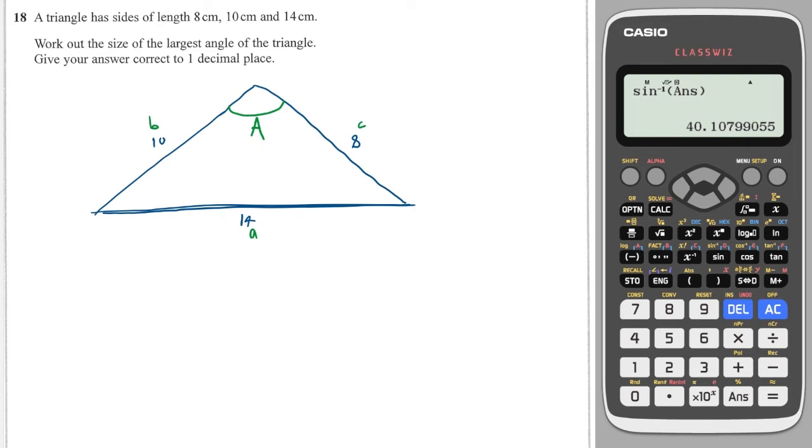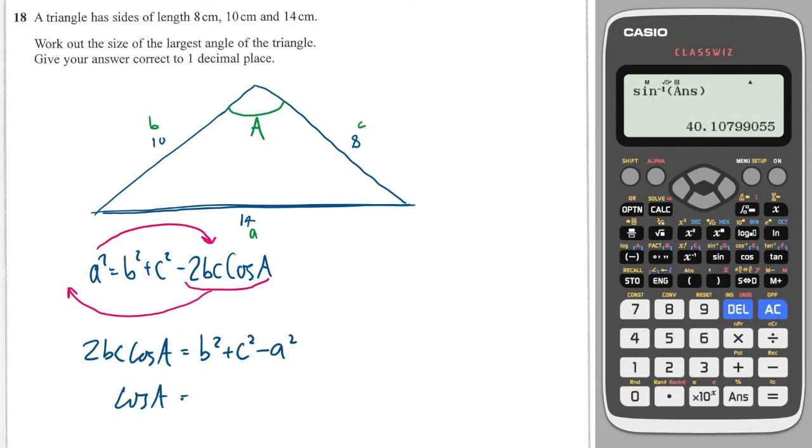Now you're not given the cosine rule for angles, you are given the cosine rule for a side. So what I would do would be to take this big chunk here and add it to the other side and then take A squared and subtract it to this side. That will give you 2BC cosine capital A is equal to B squared plus C squared minus A squared. And then you can get cosine A by dividing both sides by 2BC.